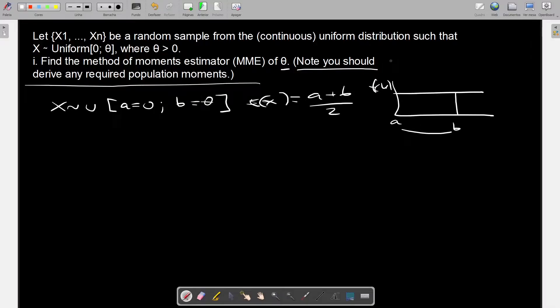But you are specifically told that you should derive any required population moments. Since we are starting out with this expression, we need to get it to capital F, and in order to do that, we need to integrate the expression.